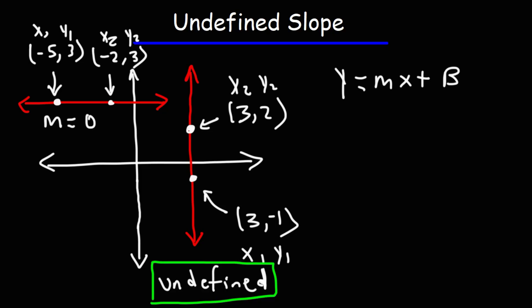How can we write any equation for a vertical line if the slope is undefined? It turns out there's a very simple way to do this: all you have to do is look at the x and y values and see which one is constant.